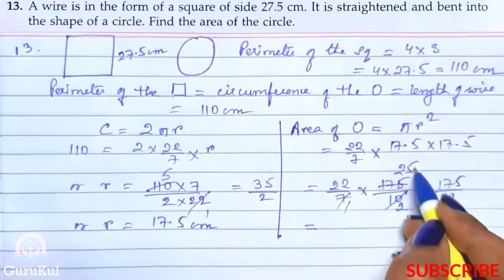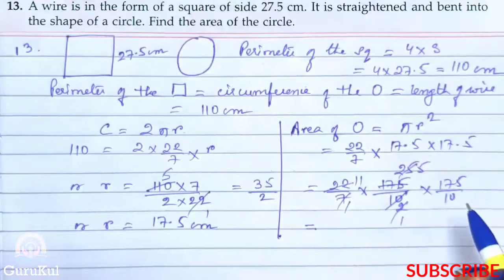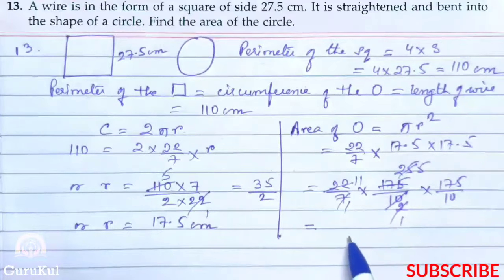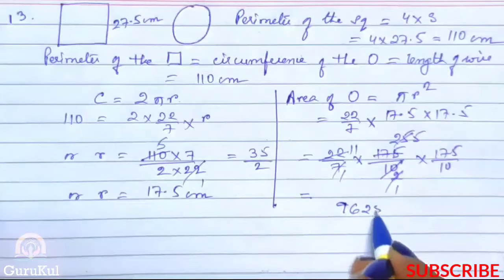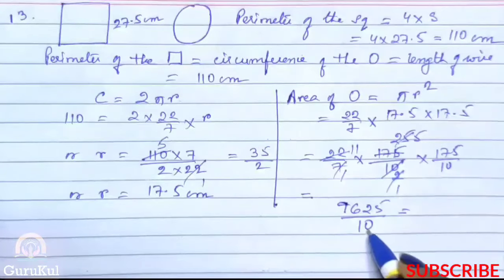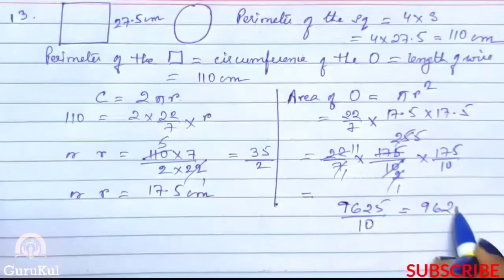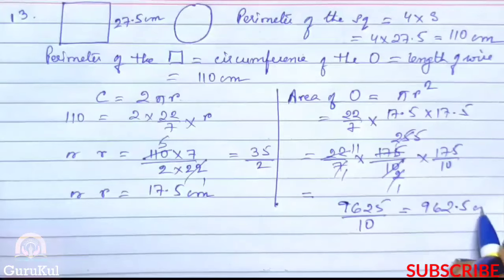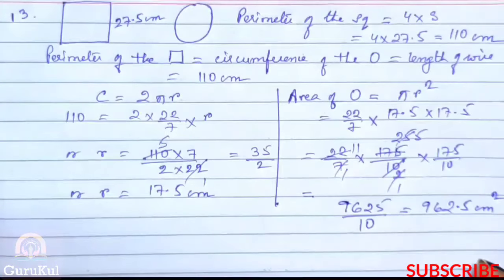5 twos are, 5 fives are, 2 ones are 2, 11. So now we have got the answer to multiply. So it will be 9625 by 10. So our answer will be 962.5 cm square. This is the area of the circle.